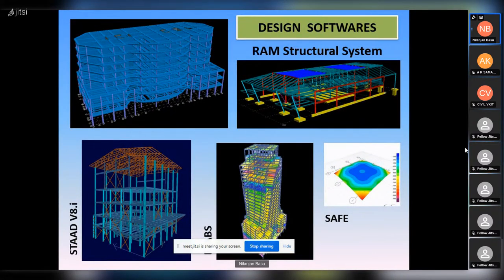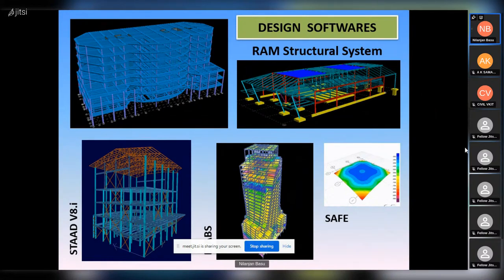These are the design software we generally use. RAM Structural System was used for a university general hospital in the US, and STAD — a very common software worldwide — is also used. Bentley products include STAD and RAM Structural, while CSI products include ETABS, which is very prominent for high-rise buildings, and SAFE, which is excellent for flat slab or slab design. Bentley also has RAM Concept, RAM Elements, and RAM Connections. These software reduce a lot of design time and detailing time.